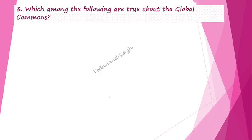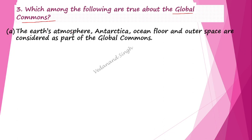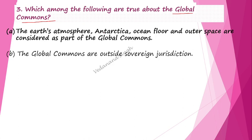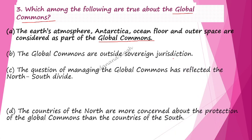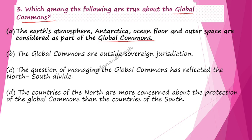Question 3 asks which among the following are true about global commons. The first option states: earth's atmosphere, Antarctica, ocean floor, and outer space are considered part of the global commons — this is the correct answer. The global commons are outside the sovereignty jurisdiction of any country or specific state. Therefore, option A is the correct answer.